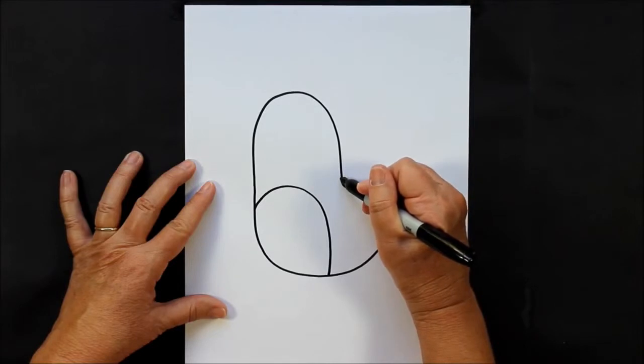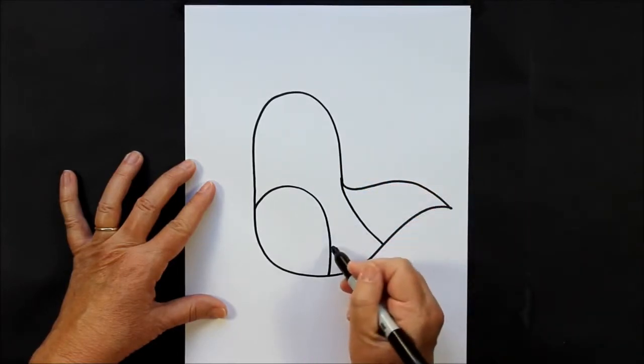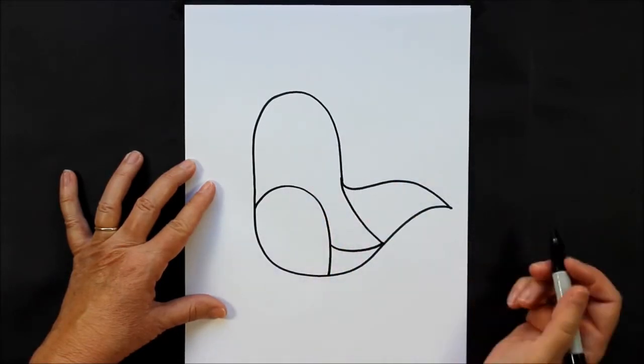Now to make his flippers, we need to make a curved line coming this way, and a curved line coming this way. That's his one flipper on his one side.